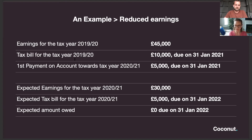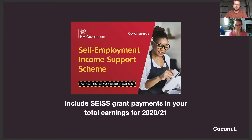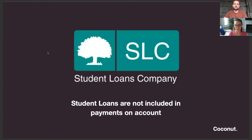One thing to bear in mind: if you claimed any money from the government as part of the Self-Employed Income Support Scheme, that money does actually class as self-employment income. So when calculating what you think your earnings are going to be, whether or not you've done your tax return yet, you need to factor in any money received through the Self-Employed Income Support Scheme. Finally, if anyone has a student loan and is self-employed, you repay your student loan as part of your self-assessment bill, but these are not included in your payments on account — you'll continue to pay these in full as part of your 31st January payment for the previous tax year.